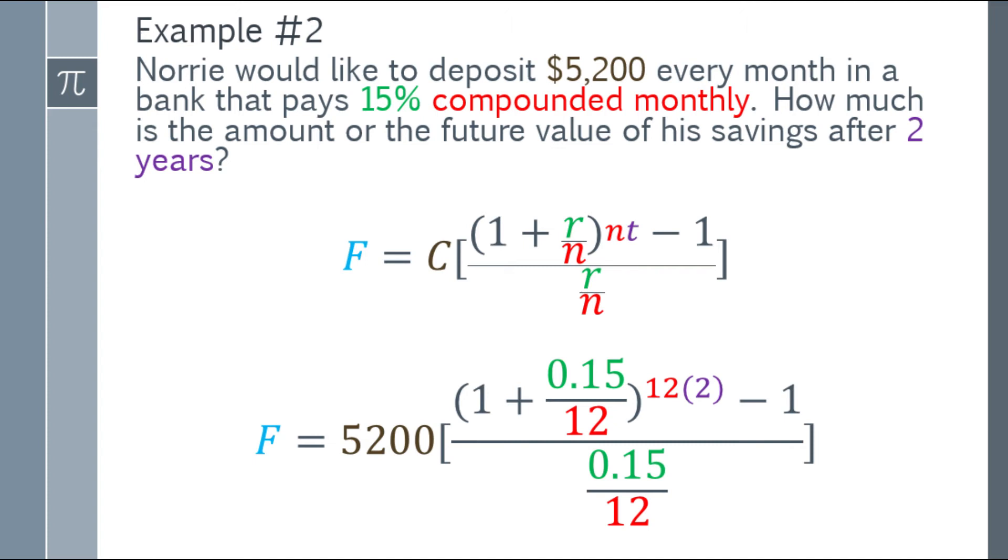C is 5,200. Times the quantity for the numerator: 1 plus r over n. R is 15% and n is 12 for compounded monthly. The exponent is n times t, which is 12 times 2. Then subtract 1. The denominator is r over n, so 0.15 over 12.